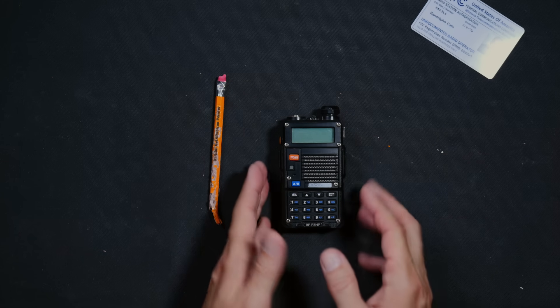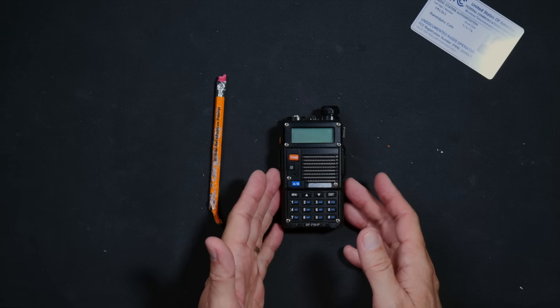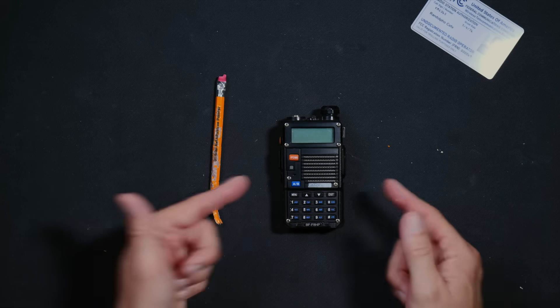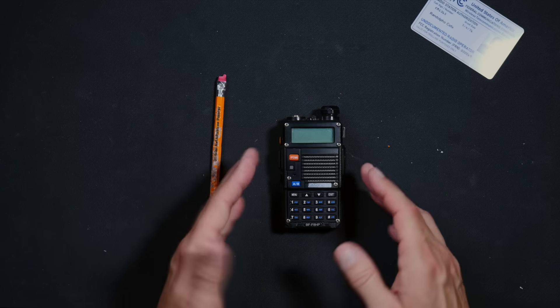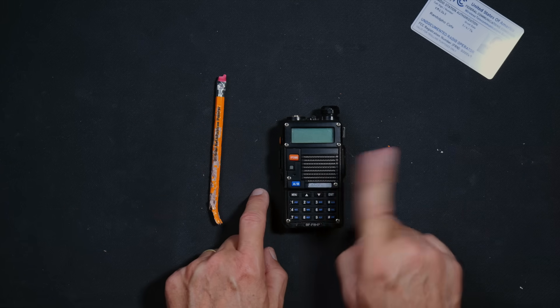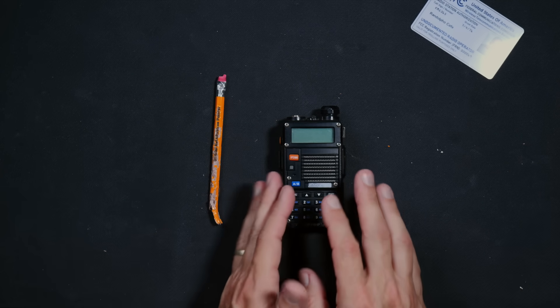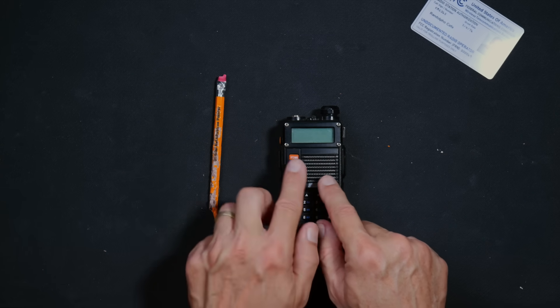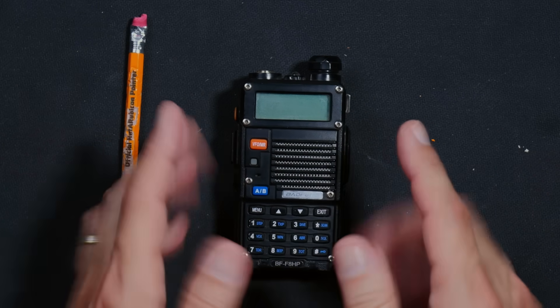Second off and even more importantly is that you can only do this if your Baofeng UV-5R or similar radio is unlocked. If your Baofeng UV-5R or similar radio is locked it will only be able to transmit on the ham radio frequencies and it will not be able to talk with regular walkie-talkie radios. You will most likely be able to hear those other radios but they will not hear you. You will not be able to transmit to them if your Baofeng UV-5R is locked.